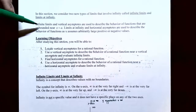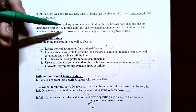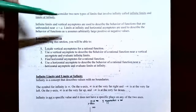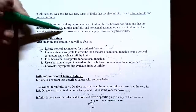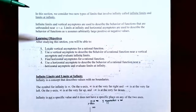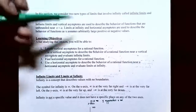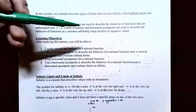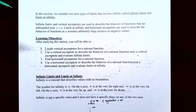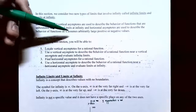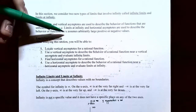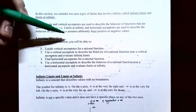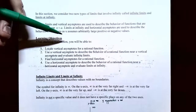Infinite limits and vertical asymptotes are related to one another, and they describe the behavior of the graph whenever the graph is unbounded, or the graph grows or decreases indefinitely when you're near a vertical asymptote like x equals a. Limits at infinity and horizontal asymptotes are also related, and they determine the behavior of the graph whenever x assumes arbitrarily large positive or negative values — so x approaching infinity or x approaching negative infinity.